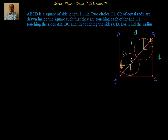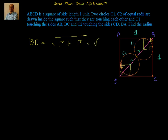The distance between the two centers equals R1 plus R2, but since all radii are equal, we call it R. First, we find the length of BD. By the Pythagorean theorem, 1² + 1² = 2, so BD equals the square root of 1² + 1², which equals root 2.